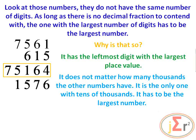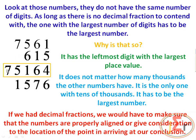It does not matter how many thousands the other numbers have — it is the only one with tens of thousands, so it has to be the largest. Even if we had a 9 in another position, the next column represents tens of thousands, and 10 is always greater than 9. If we had decimal fractions, we would need to consider the location of the decimal point.